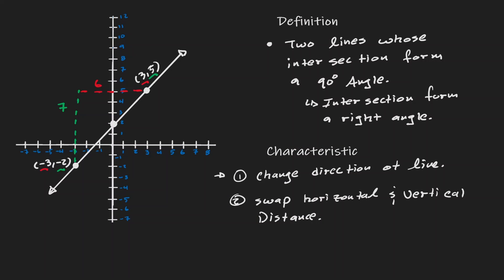So let's perform these two characteristics. If I had a horizontal distance of 6, now I'm going to have a vertical distance of 6. But instead of going up, I'm going to go down. So from this point, let's move 6 units down.